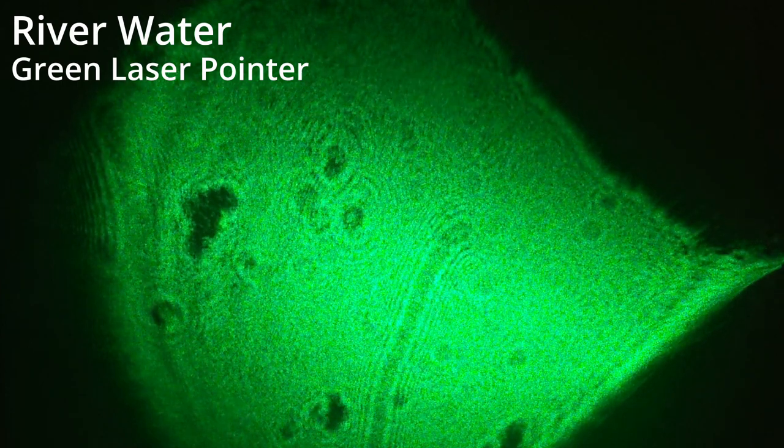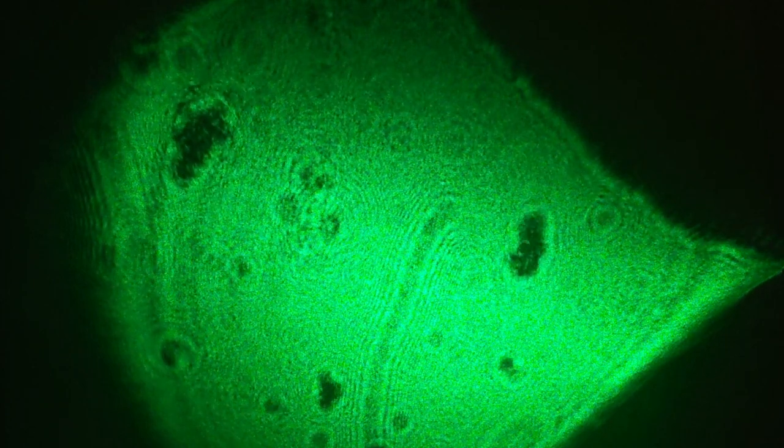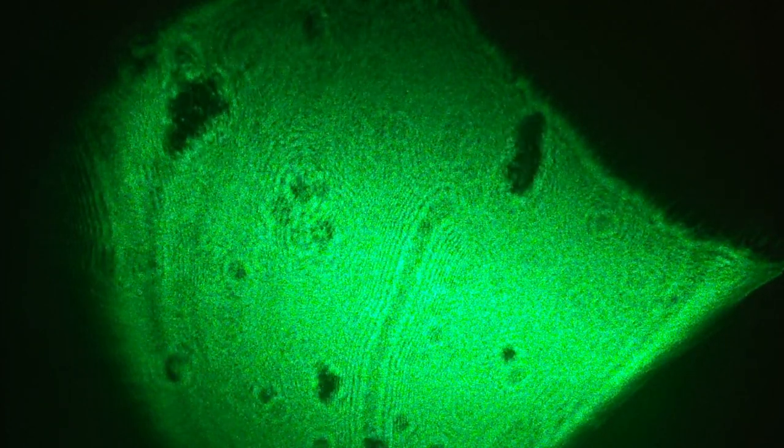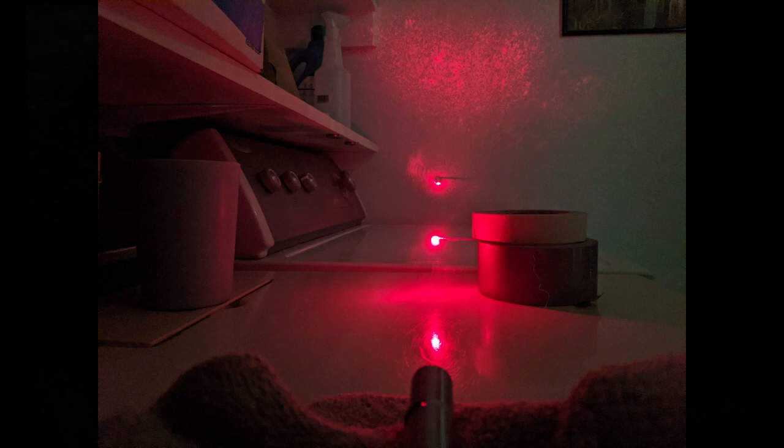Pond and river water had the most microbial life, including long strands of algae and plenty of swimming cells. It was so much fun to watch, and once the setup was working, we could use a pipette to add a new drop to our loop, revealing an entirely new set of aquatic creatures.